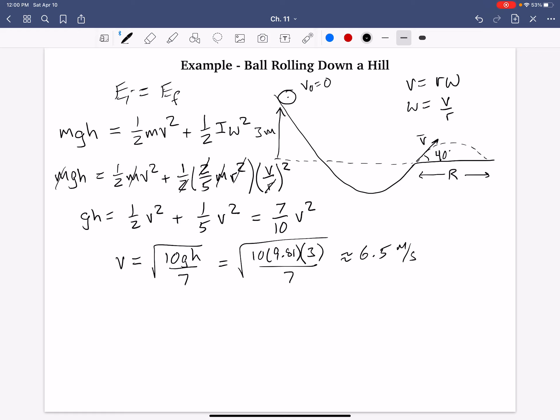And then, part two, to find the range, in other words, the horizontal distance, we can just use the range equation. v squared sine of 2 theta over g. Well, v squared is our 6.5. And the angle is 40. So, that's sine of 80. If your calculator's in degrees, we should get approximately a range of 4.2 meters.